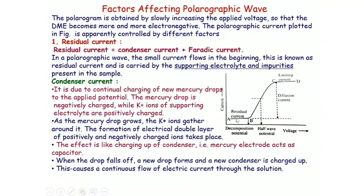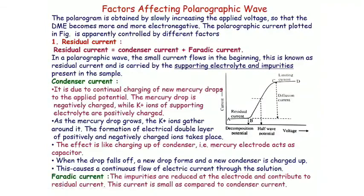The initial current observed in the polarogram is due to the presence of the supporting electrolyte. When the drop falls, a new drop forms and a new condenser is charged up, causing a continuous flow of electric current through the solution. The K⁺ ions of the supporting electrolyte gather around the negatively charged mercury ions, forming an electrical double layer, and as each new drop forms the process is continuous, so electric current flows through the cell.